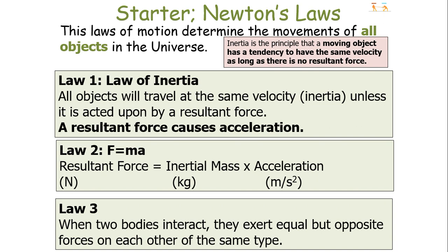To clarify: the first law, the law of inertia, states that all objects will travel at the same velocity unless acted upon by a resultant force — a resultant force causes acceleration. The second law states that resultant force equals inertial mass times acceleration. And the third law states that when two bodies interact, they exert equal but opposite forces on each other of the same type.